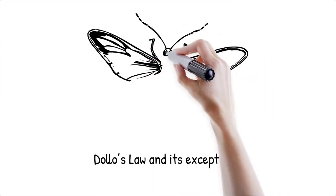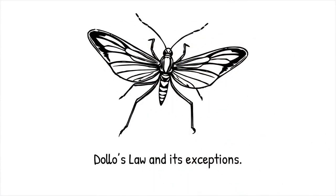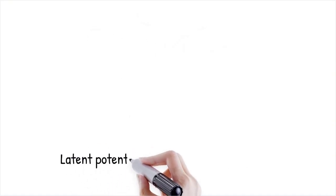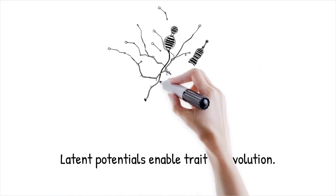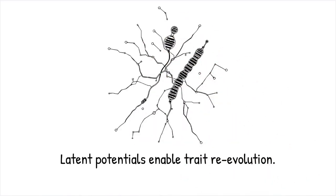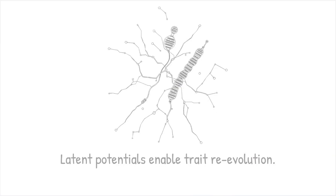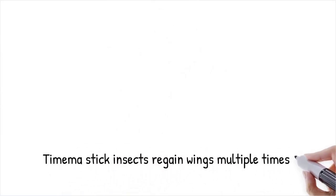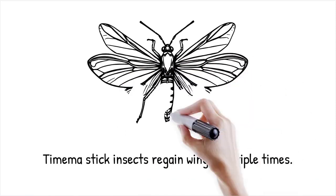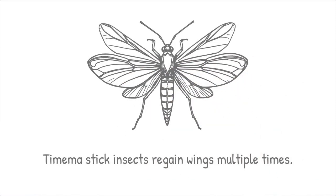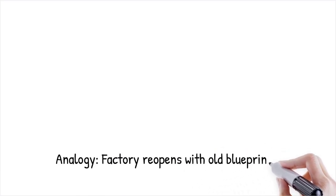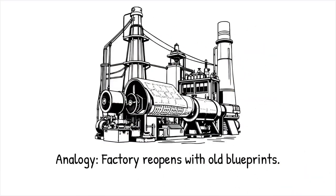Dollo's law posits that once a complex trait is lost, it cannot be re-evolved in the same form. Yet documented reversions — such as wing regain in certain stick insects — reveal exceptions driven by latent developmental potentials. Non-linear interactions among genes, epigenetics, and environment can reactivate dormant pathways, producing atavistic traits. These examples show that evolutionary trajectories can loop back under specific conditions. The stick insect genus Timema has independently regained wings multiple times in its evolutionary history — like a retired factory reopening using preserved blueprints despite decades of dormancy.